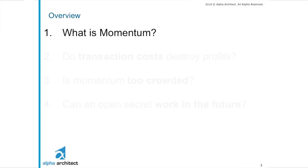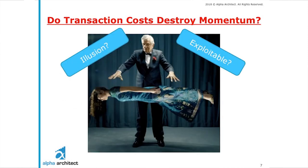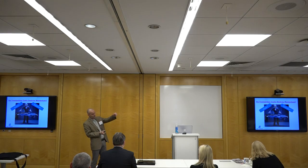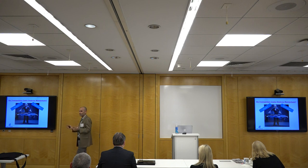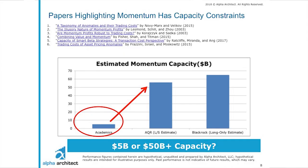That doesn't mean we may be able to implement it, which we'll talk about next. But the facts are clear and no one really disagrees in the business of research. One thing a lot of people debate, though, is transaction costs. The argument is: okay, you found this momentum thing and it earns huge returns, but it requires a ton of trading and turnover, so after frictional costs, it's a waste of time.